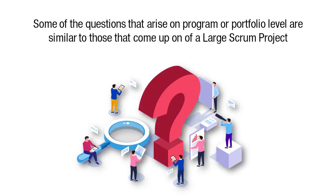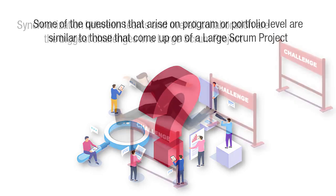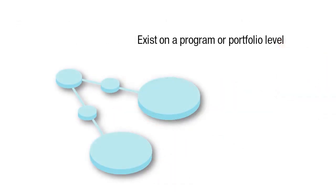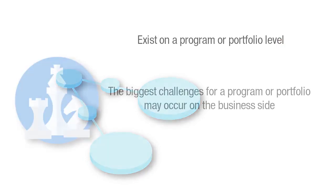Some of the questions that arise at the program or portfolio level are similar to those that come up on a large Scrum project. The synchronization between teams and the overall collaboration are the biggest challenges faced in a large Scrum project, and these challenges also exist at the program or portfolio level.